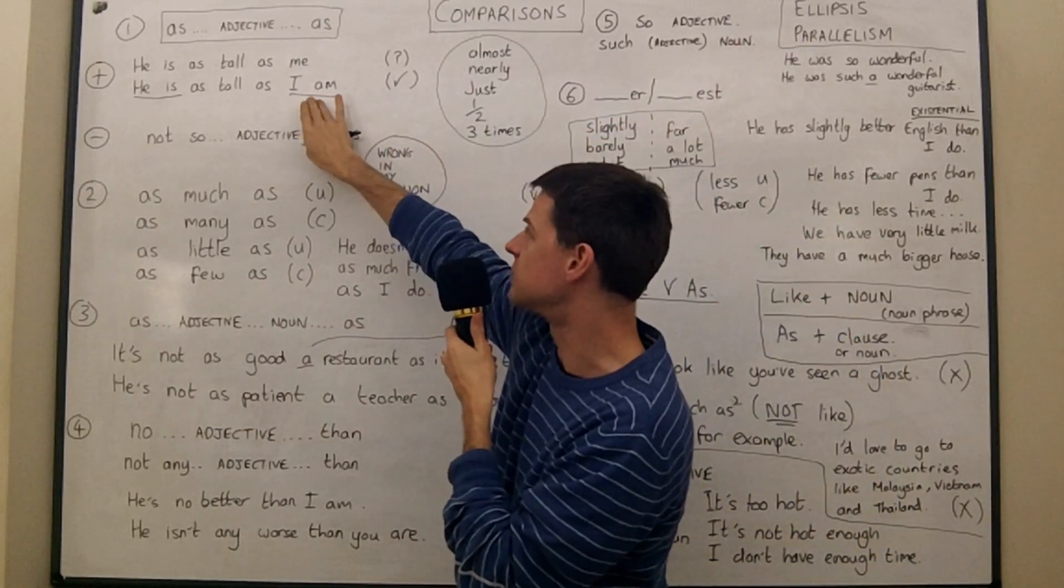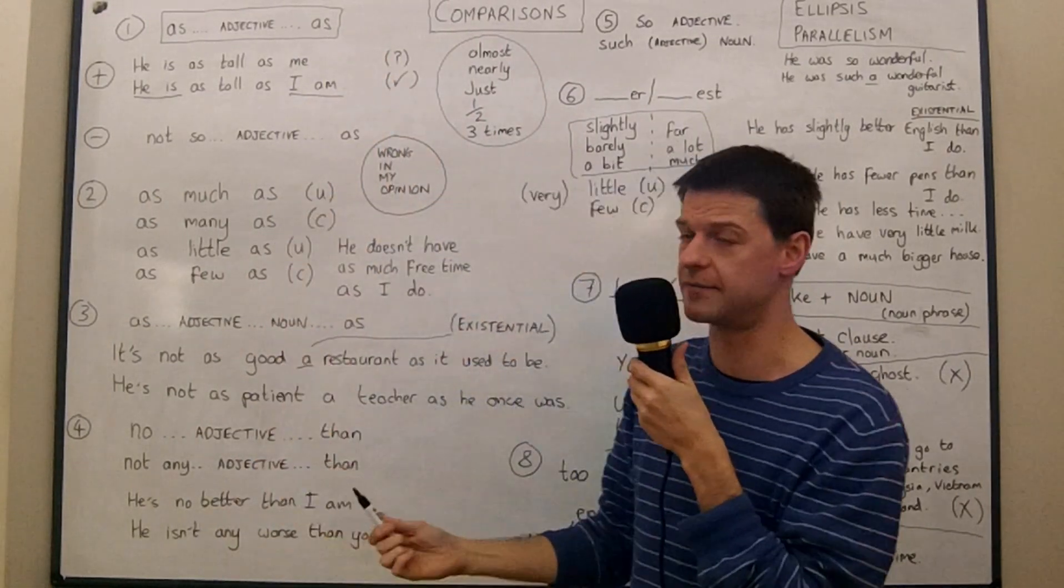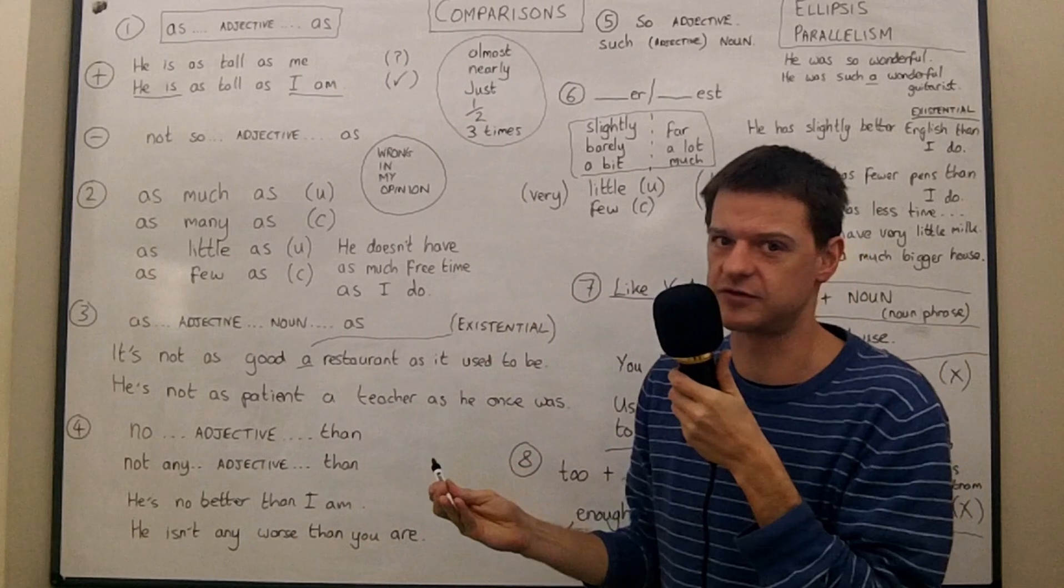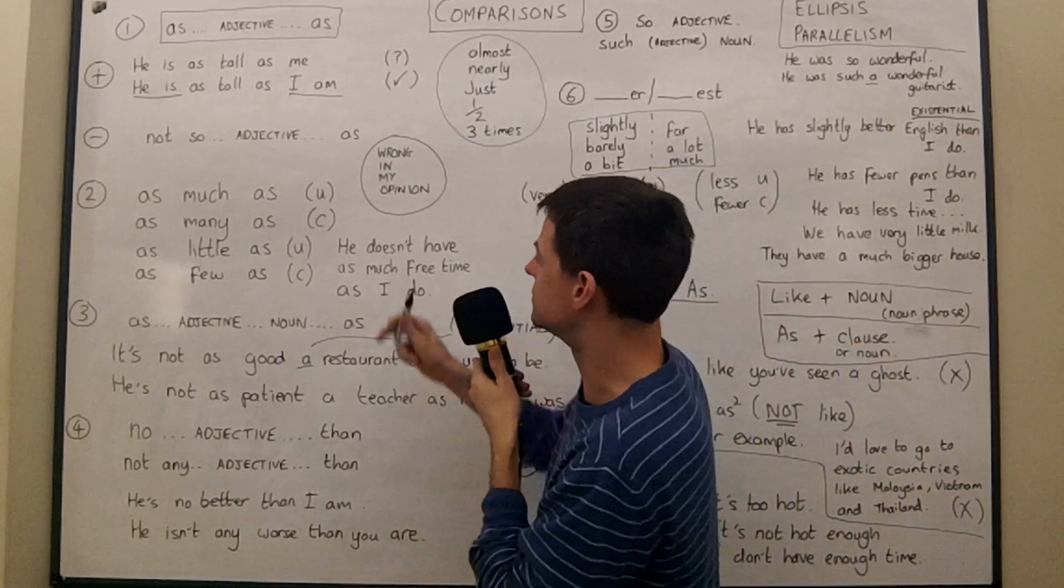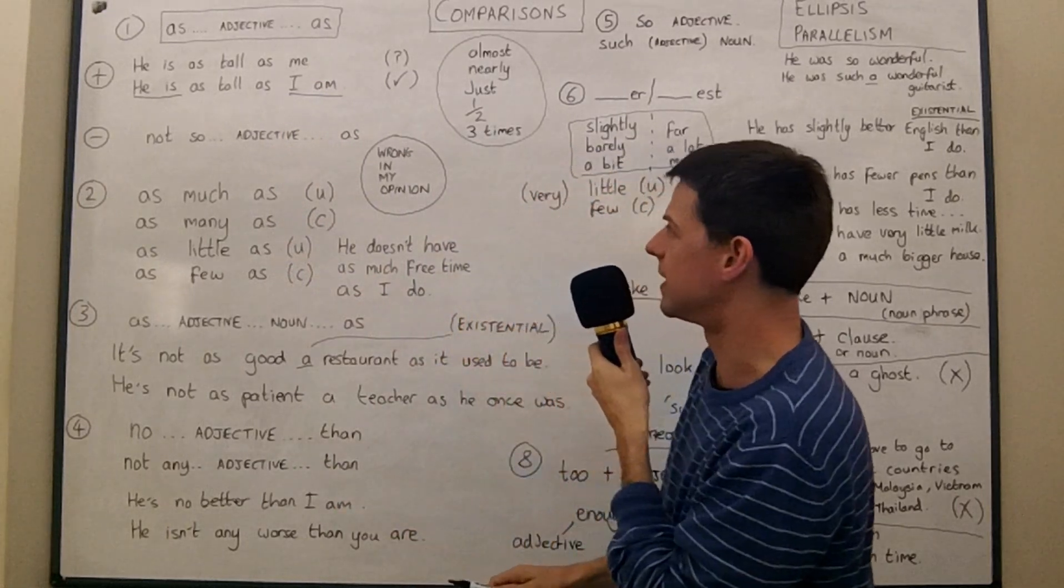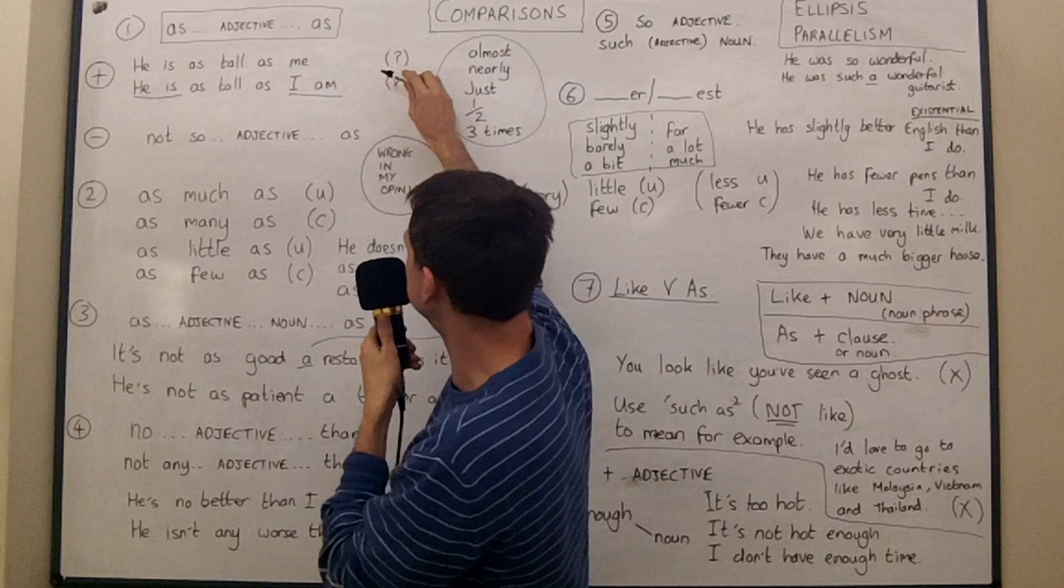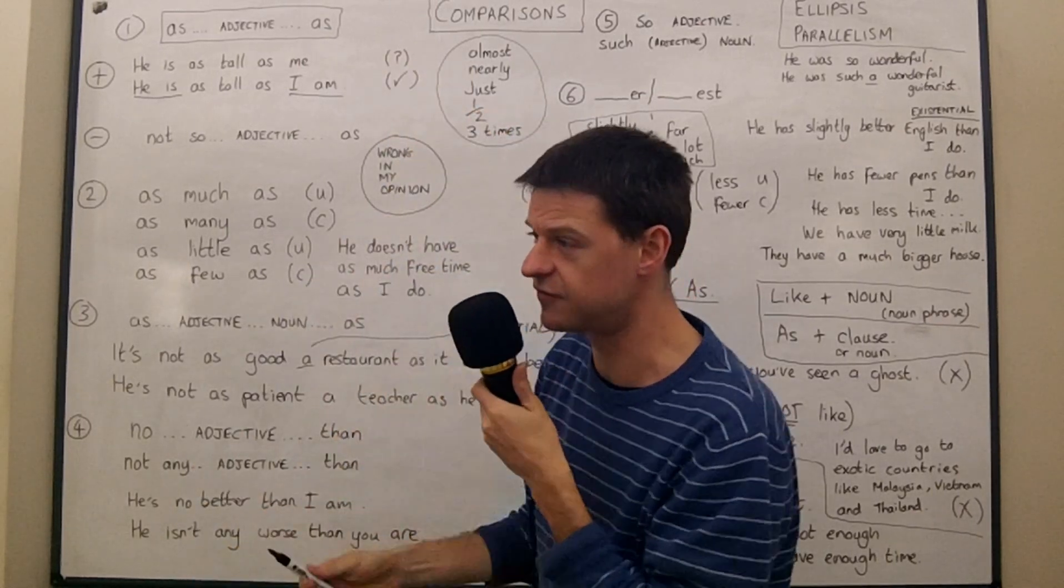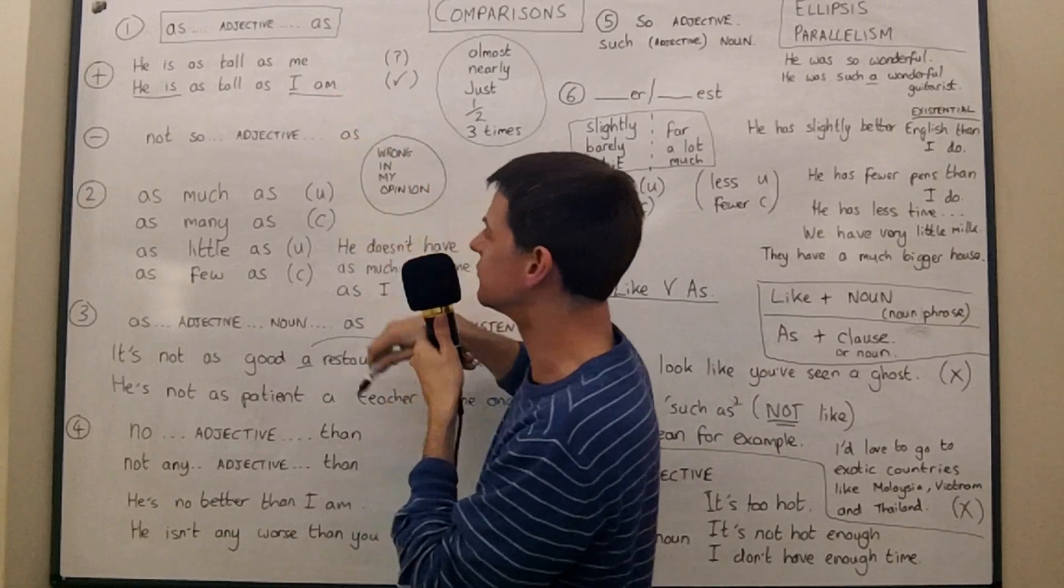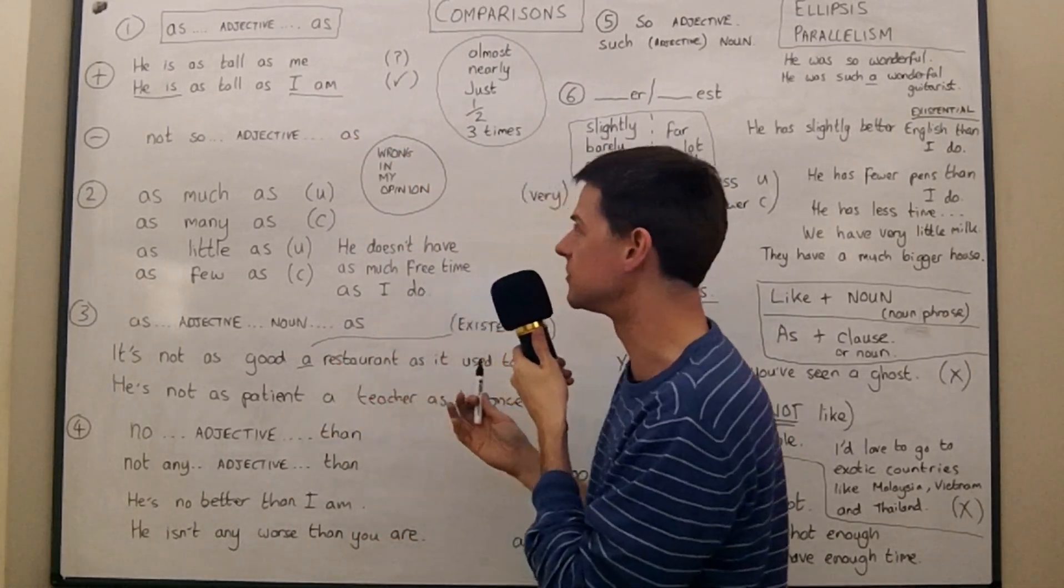So I prefer the second version. However, you will hear this first version all the time. It sounds more natural to say that. And I think when there's no ambiguity, we very often do just use the object pronoun. So that's something to remember, first of all, that this one is better. It's certainly better in formal situations. Any kind of formal essay, use the parallel structure. If you're with your friends just chatting, don't worry about it so much.